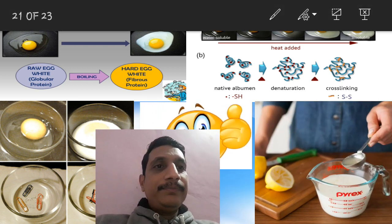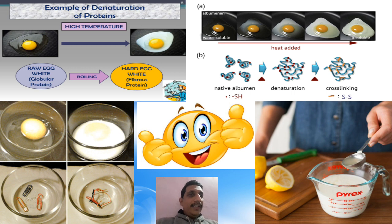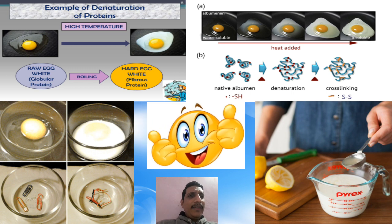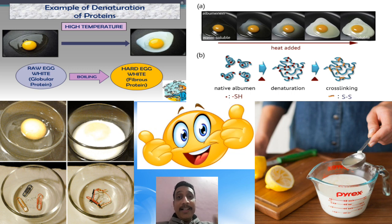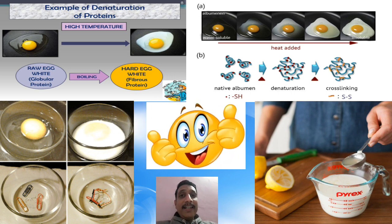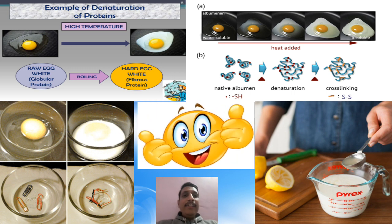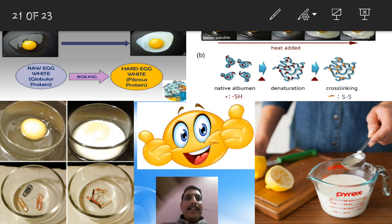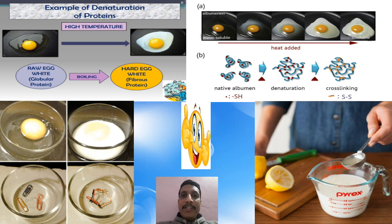The second example is curdling of milk — this is shown in the last diagram. What is added to the milk to curdle it? Lime — which is an acid. When an acid is added to the milk, denaturation occurs by the action of acid. The milk is converted into curd. So boiling of egg and curdling of milk are examples of denaturation of protein — an important property of protein.